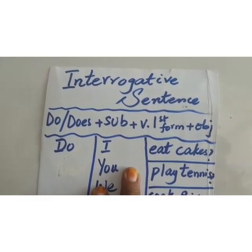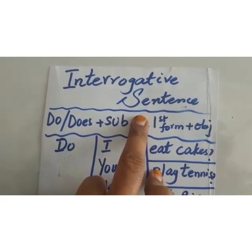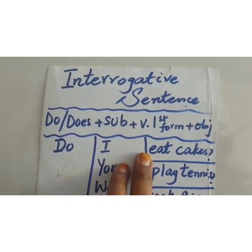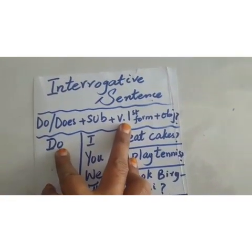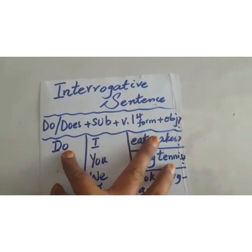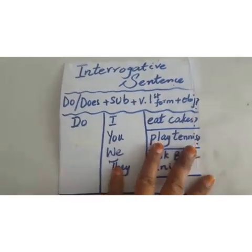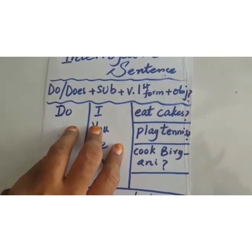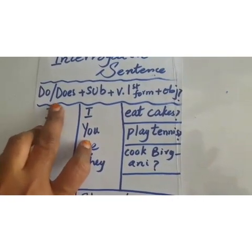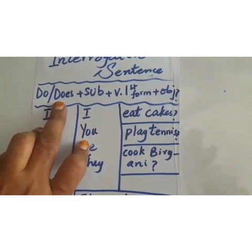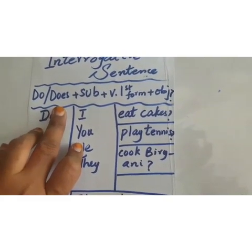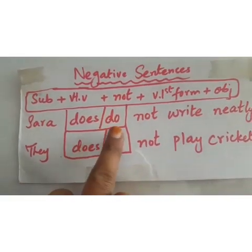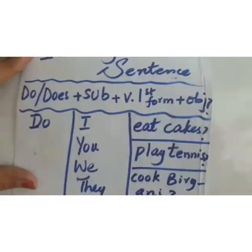Grade 6, as I told you, there are three types of statements: number one is affirmative sentence, number two is negative sentence, and the third one — which I did not explain last time — is interrogative sentences. An interrogative sentence is one in which we use a question mark; it asks a question. There will be a change of positions. The helping verbs 'do' and 'does' will be used — just as they were used in negative sentences — but now in a different arrangement: helping verb, then subject, then verb in first form, then object.